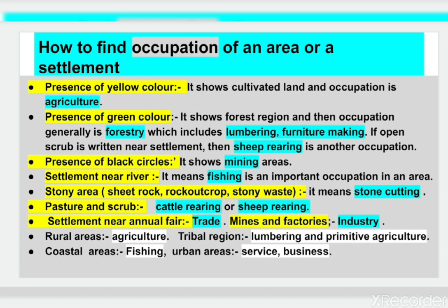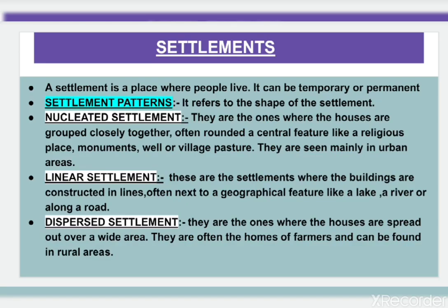Mines and factories written on the map means industry is an occupation. Area-wise, occupations also differ: in rural areas the main occupation is agriculture; in tribal regions it is lumbering or primitive agriculture; in coastal areas it is fishing; and in urban areas the main occupation is service and business.